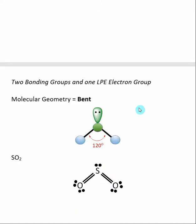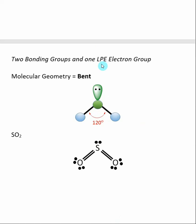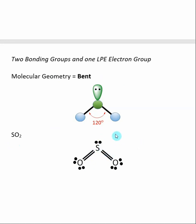If we still have three groups of electrons, but one of those groups is a lone pair, the molecular geometry is called bent. If we look at how the atoms are arranged, the molecule looks bent. With molecular geometry, we treat the lone pair electron as if it's not there. A good example is SO2, where the oxygen-sulfur-oxygen bond angle is 120 degrees. In SO2, the central atom has two sets of bonding electrons — and remember, it doesn't matter that they're double bonds, each still counts as a single group. So sulfur has three groups of electrons, and because one is a lone pair, the molecular geometry is bent.